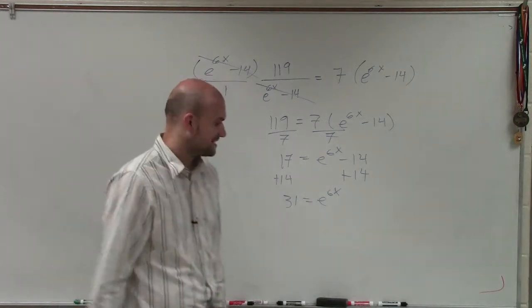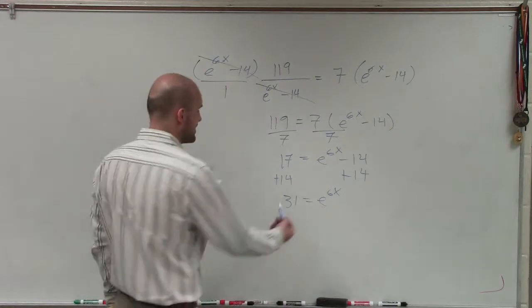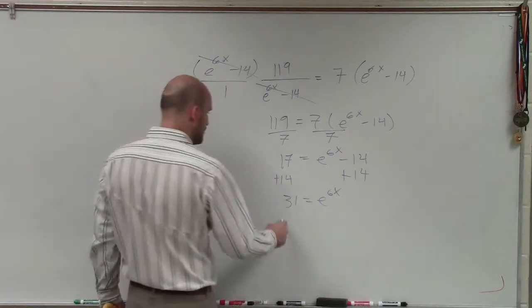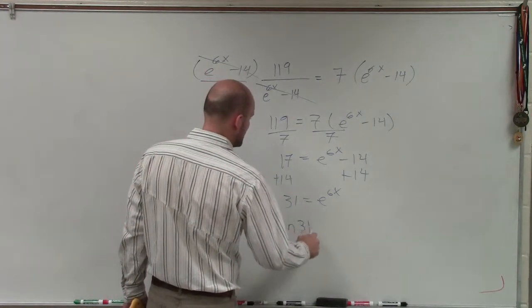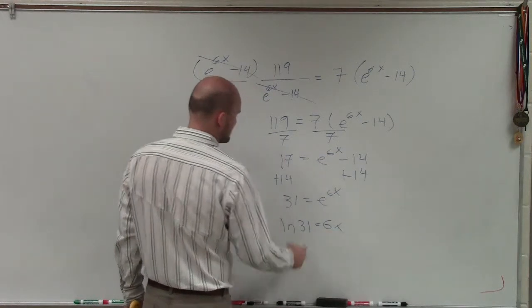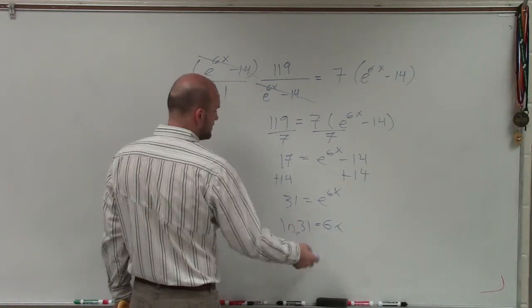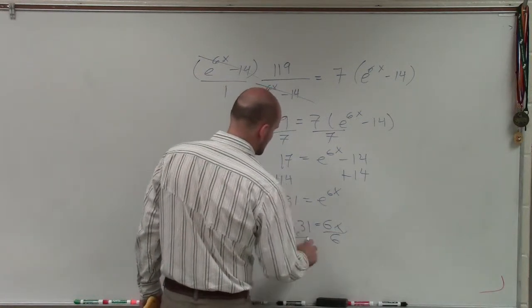I could take the natural logarithm of both sides, or I could also just convert this to exponential form, which would be ln of 31 equals 6x, right? Because that's going to have base e down there. So then I divide by 6.